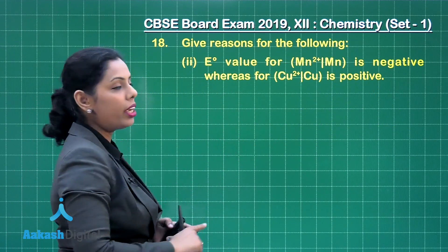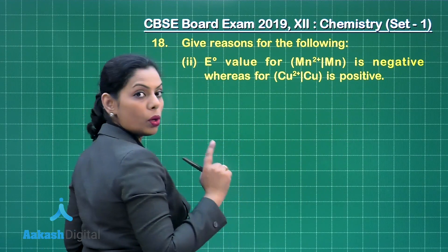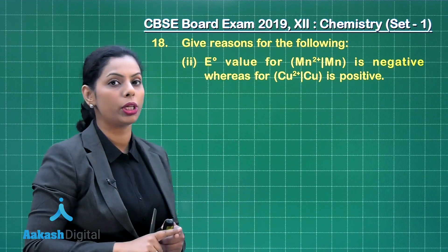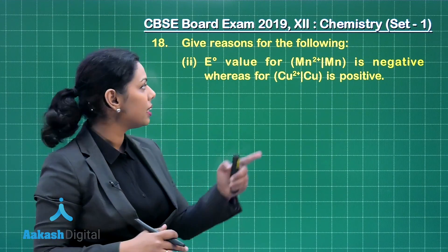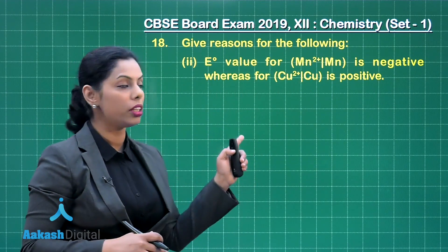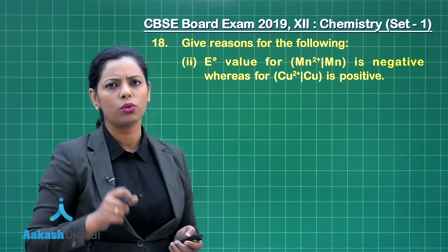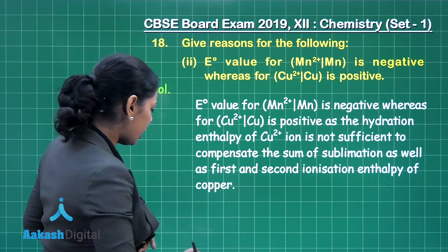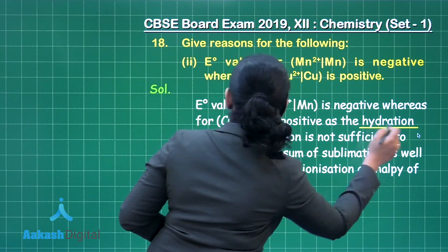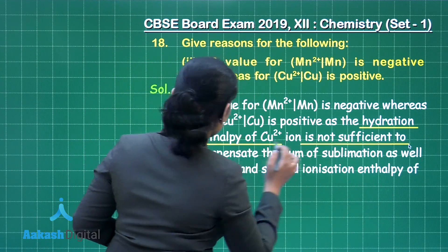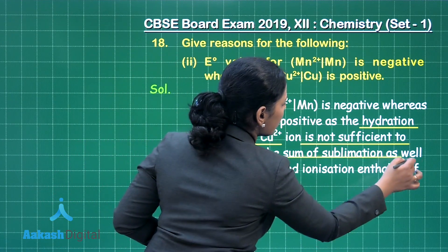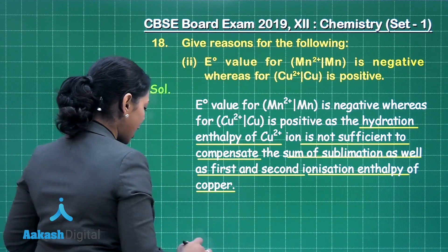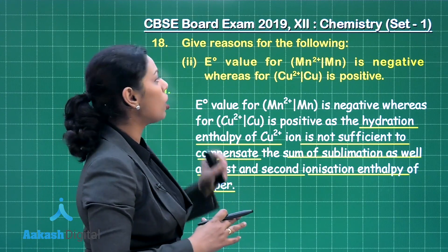The E° value for Mn²⁺ to Mn is negative whereas for Cu²⁺ to Cu it is positive. These are the reduction potentials for these two elements. The reason for that is the hydration enthalpy. In case of Cu²⁺ ion, the hydration enthalpy is not sufficient to compensate the sum of sublimation enthalpy as well as first and second ionization enthalpy of copper, and that results in its positive E° value.